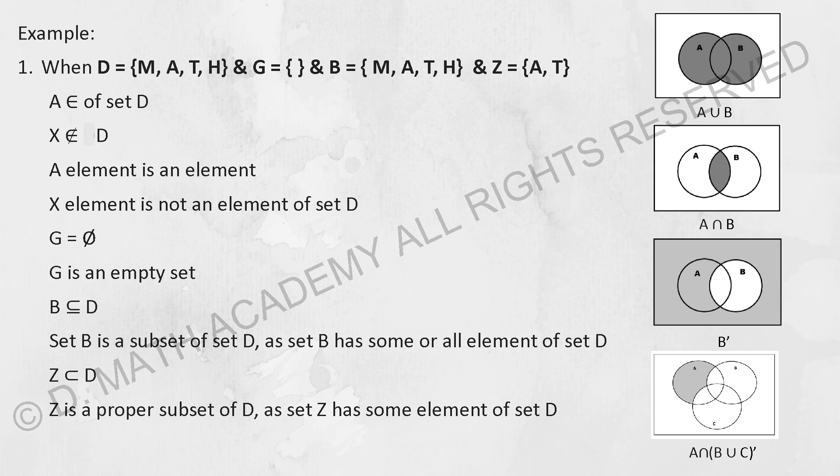And Z is actually a subset of D. This shows you that Z is actually a proper subset of D because they don't have the exact same elements. So they are considered as a proper subset instead of subset. This is just to show you the difference.